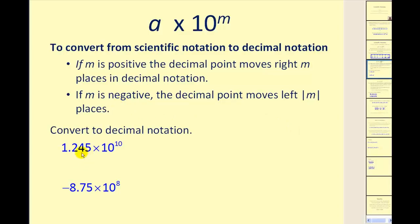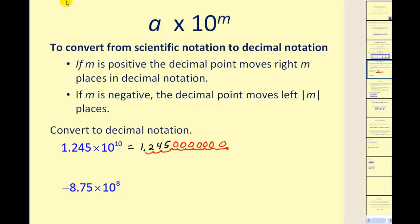In the first example, multiplying by a positive power of 10 means the decimal notation number will be larger than a. To find that number, we move the decimal point right 10 places. Starting with the value of a and moving right: after three places we continue seven more to the right, adding seven zeros. So 1.245 times 10 to the 10th power equals 12,450,000,000.